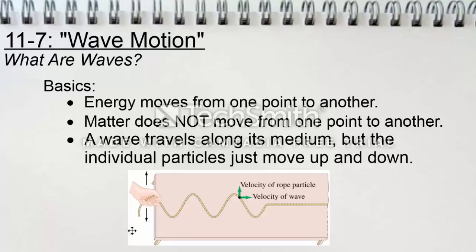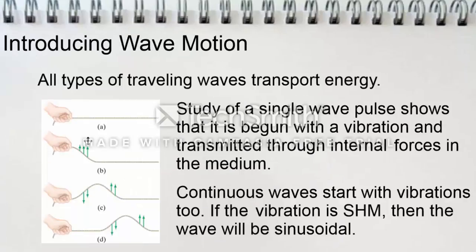This figure here depicts a wave traveling on a chord. The wave travels to the right along the chord, and particles of the chord oscillate back and forth on the tabletop. All types of traveling waves transport energy. The study of a single wave pulse shows that it is begun with a vibration and transmitted through internal forces in the media. Continuous waves start with vibrations as well. If the vibration is simple harmonic motion, then the wave will be sinusoidal.